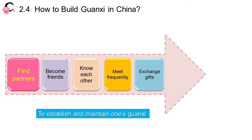You need to help him or her when they need your help. This paves the way for the moment that you need their help. Just by doing this, you can build the 关係 (Guanxi) with Chinese partners.